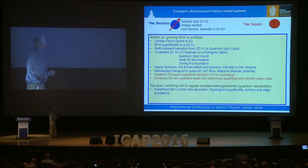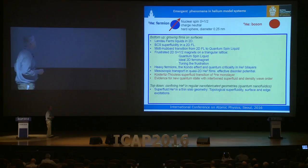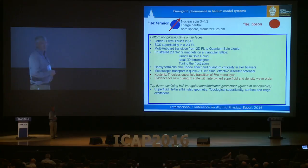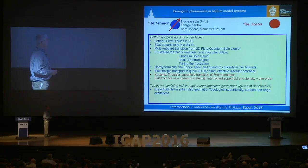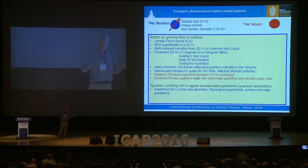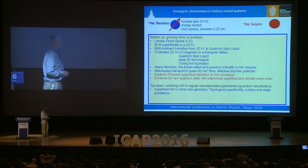We have two atoms: helium-3 is a fermion and helium-4 is a boson. The topics of interest include Landau Fermi liquids in two dimensions, the possibility of BCS superfluidity in a two-dimensional Fermi liquid, a Hubbard transition from a Fermi liquid into a quantum spin liquid, frustration, magnetism, heavy fermion physics, and mesoscopic transport. For helium-4 films, I'll discuss evidence of a new quantum state with intertwined superfluid and density wave order — a form of supersolid — and helium-3 confined in nanofabricated geometries.